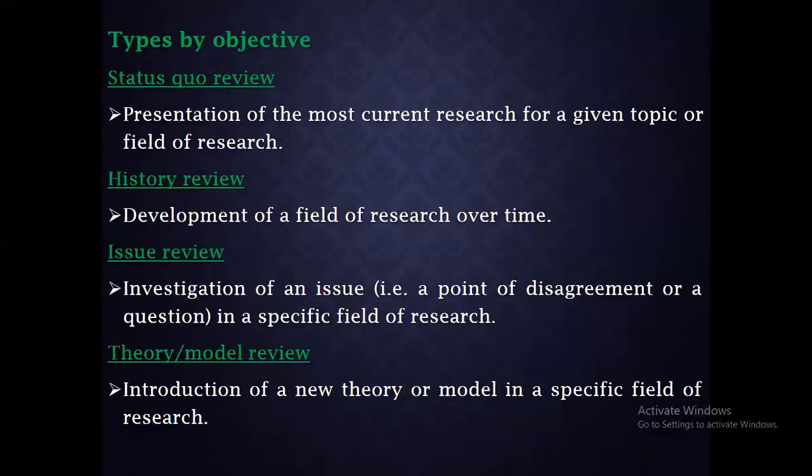In terms of objective types, a status-quo review presents the most current research for a given topic or field — considering only recent work, such as the last five or ten years. A history review covers the development of a field over time — for example, what was happening in the 1990s, then in 2000, then in 2010 — tracking advancements decade by decade.